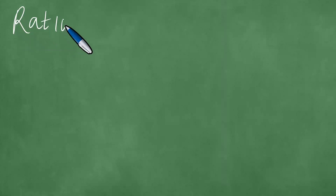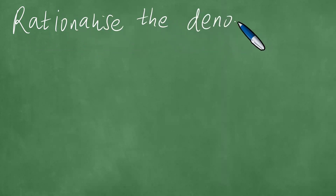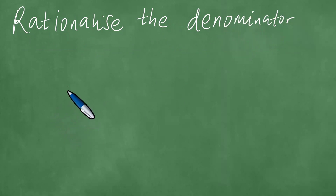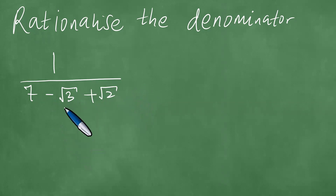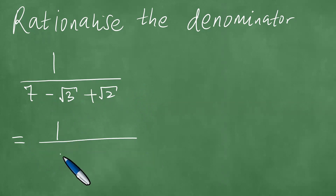We're going to look at the next question. We still need to rationalize the denominator. How do we rationalize the denominator given 1 over 7 minus the square root of 3 plus the square root of 2? This is the question given. First things first, we realize we have 7 here — we can put a plus here like so, just associating the terms a little bit.